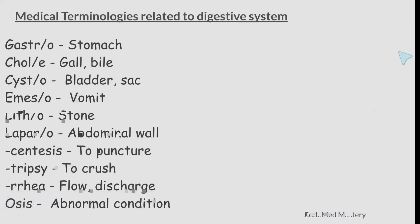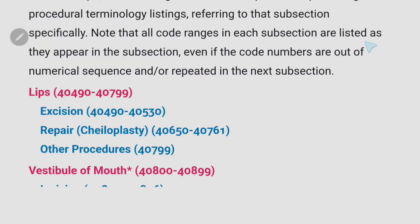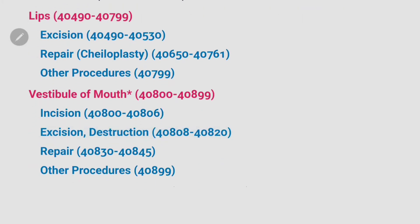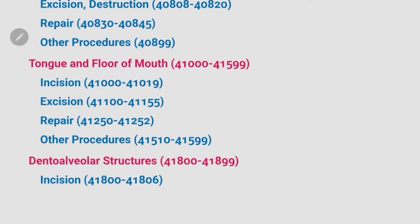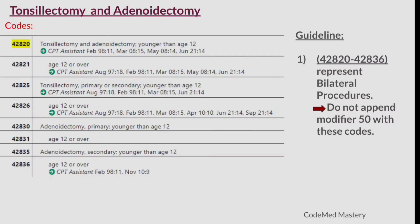The digestive system code range in the CPT surgery section is 40490 to 49999. The digestive system subsection is arranged first by anatomic region and then by procedure. Starting with the lips, each anatomic region has its own code range. Similarly, other anatomic regions of the digestive system have different code ranges.